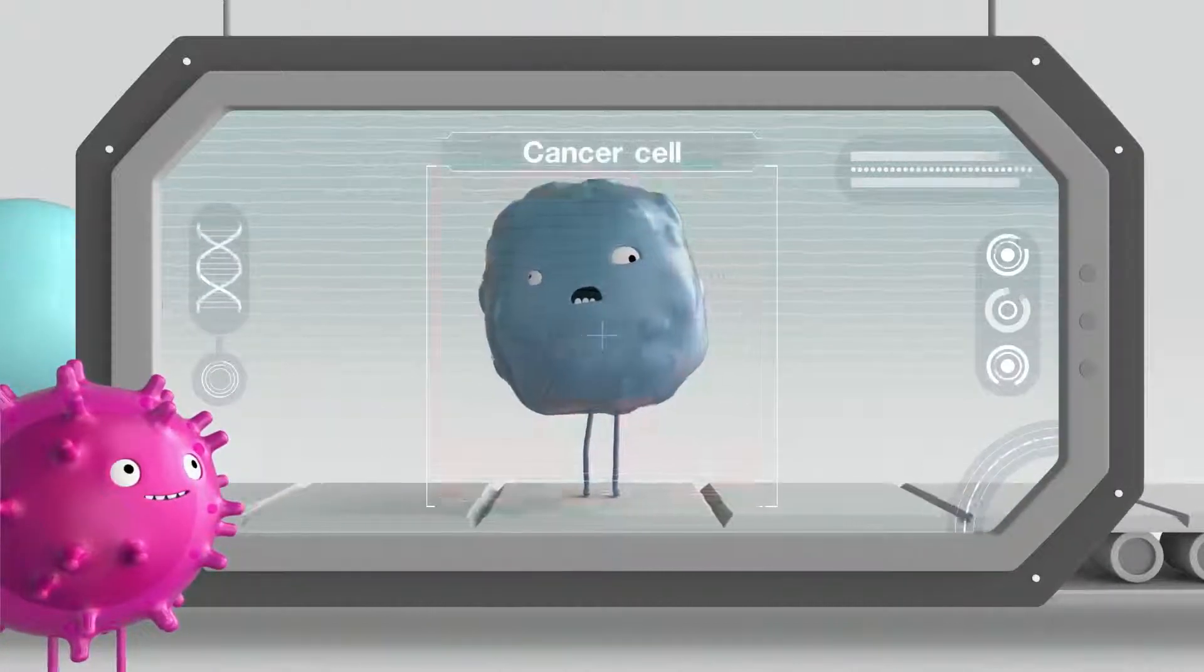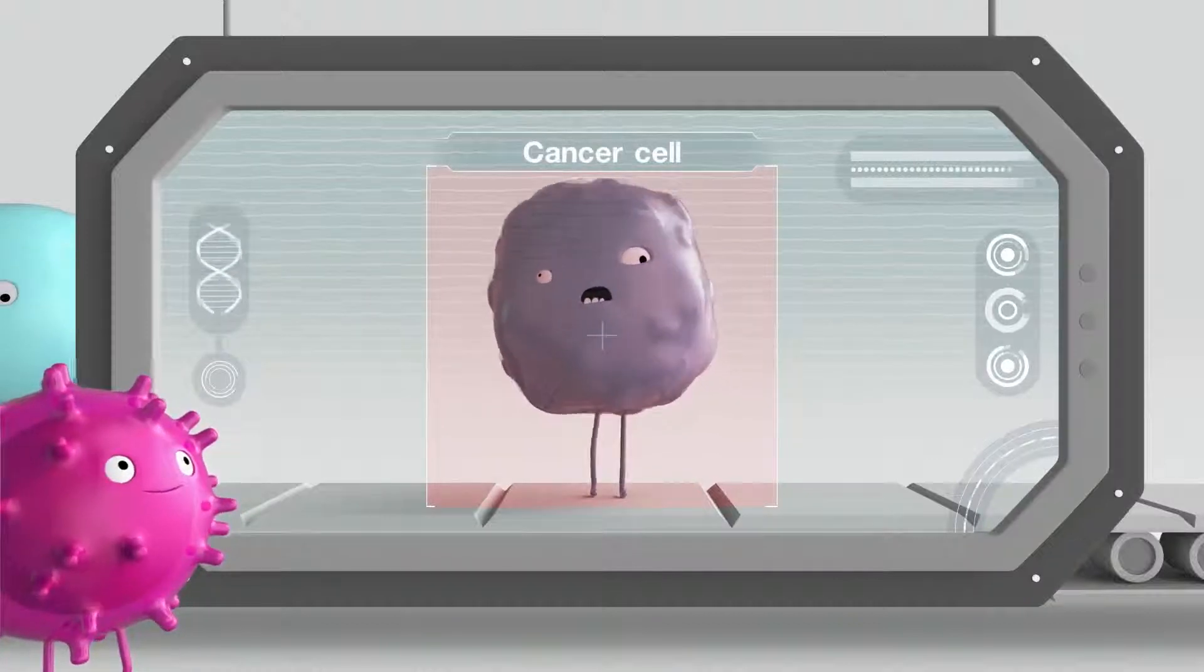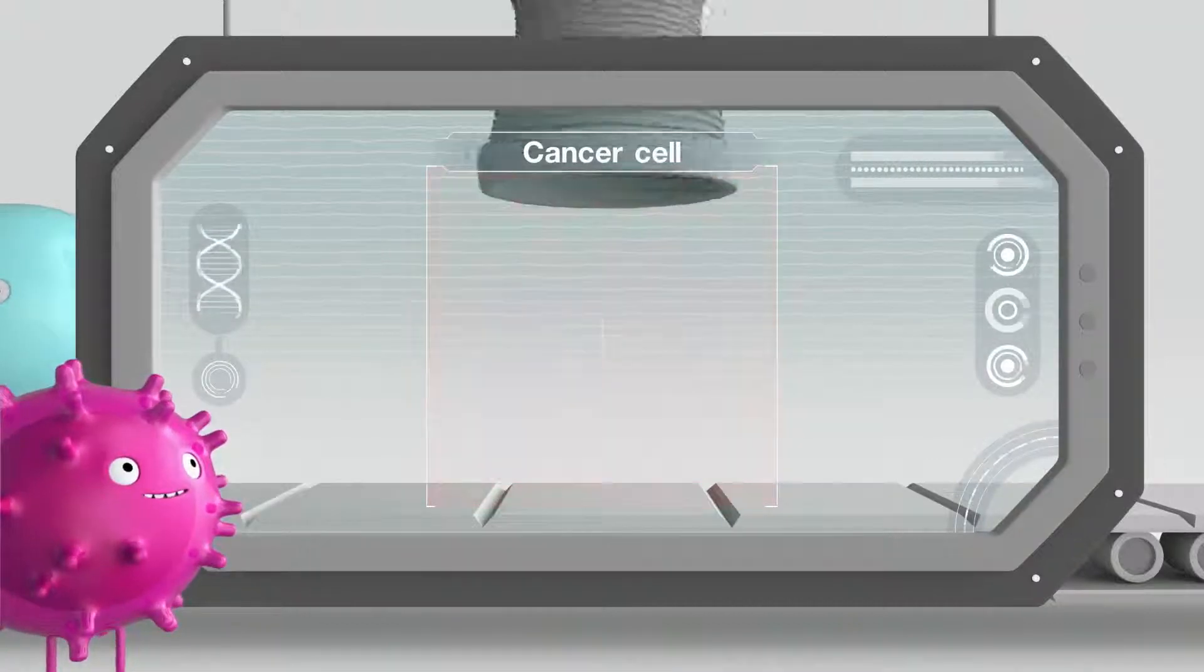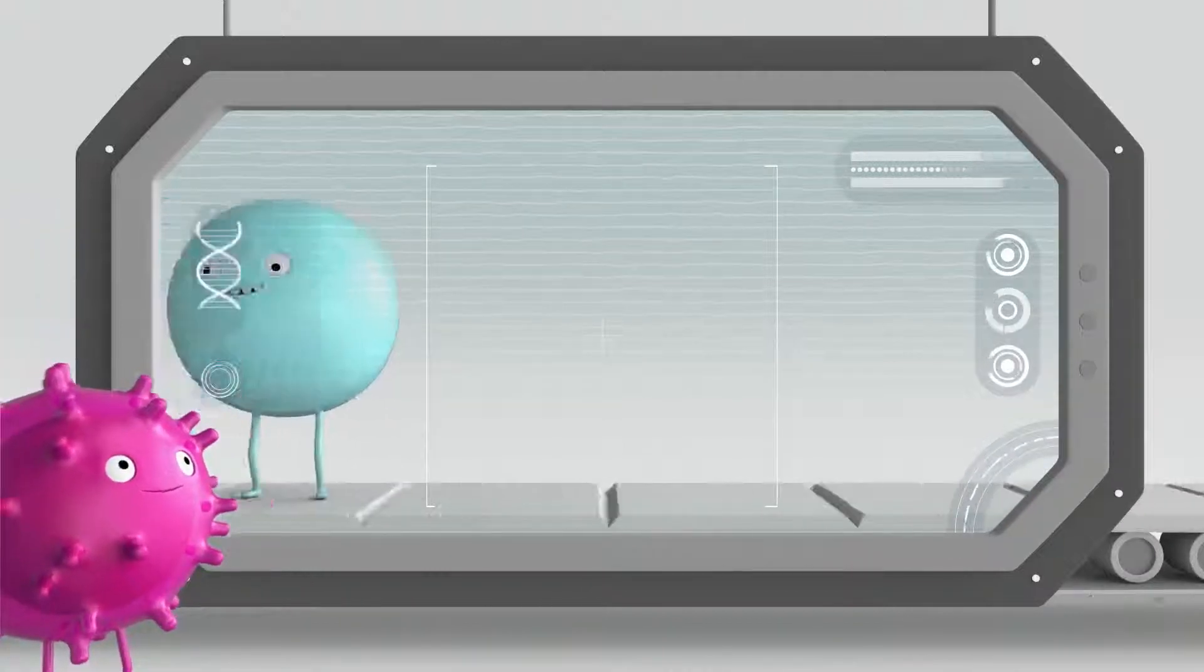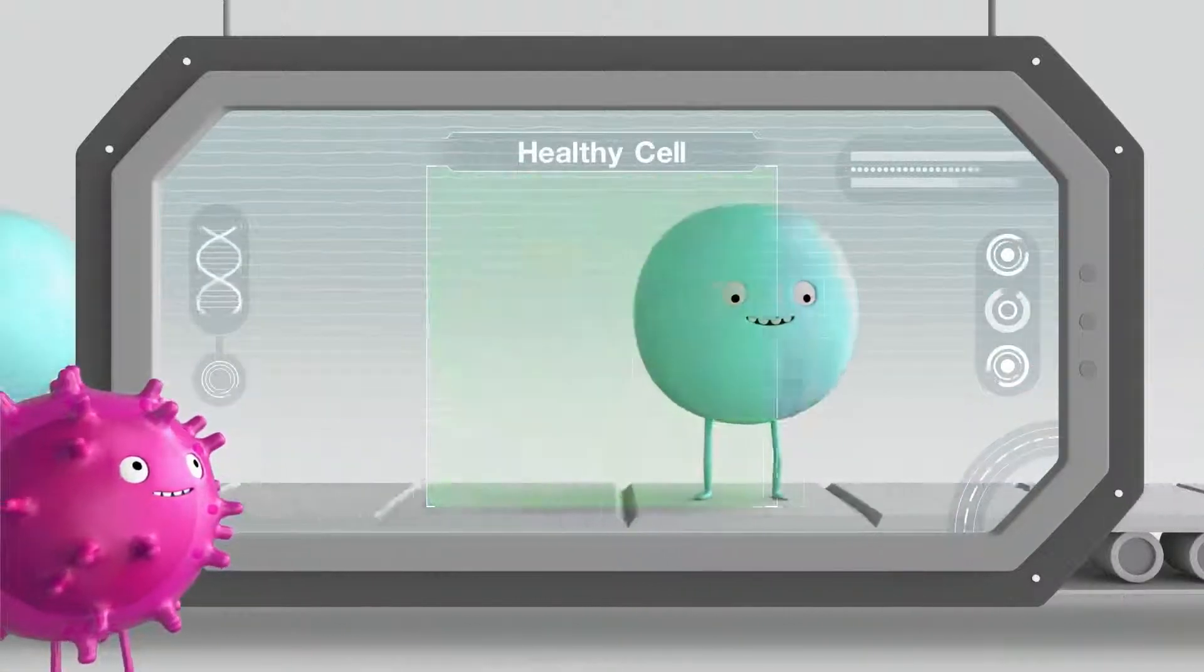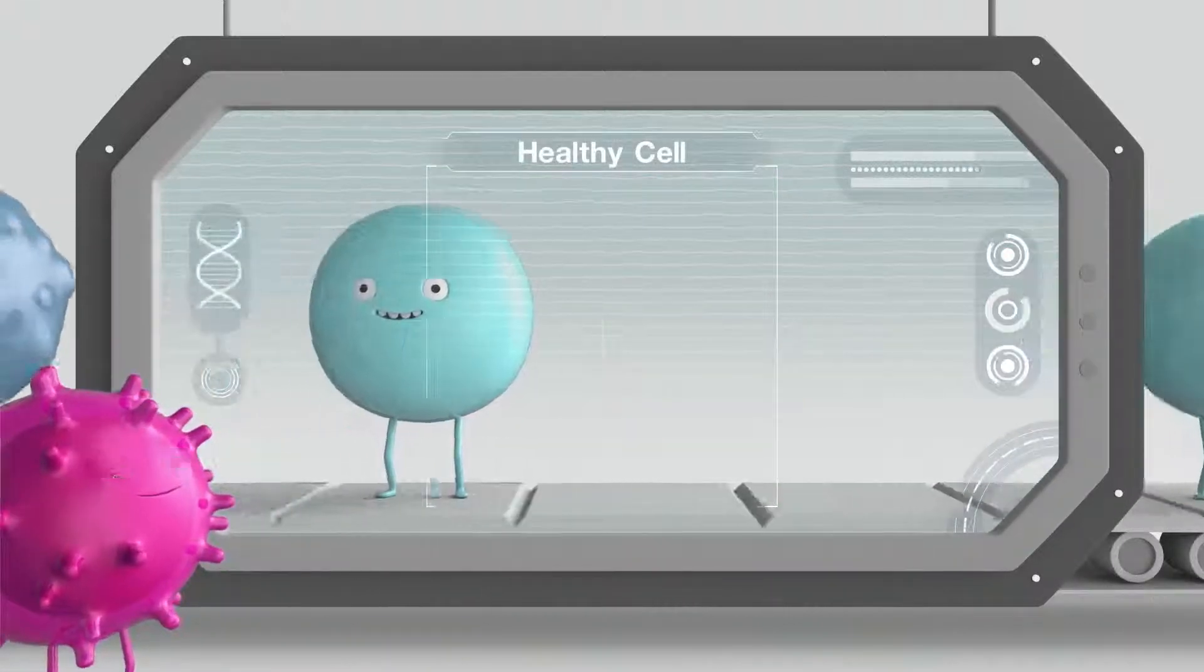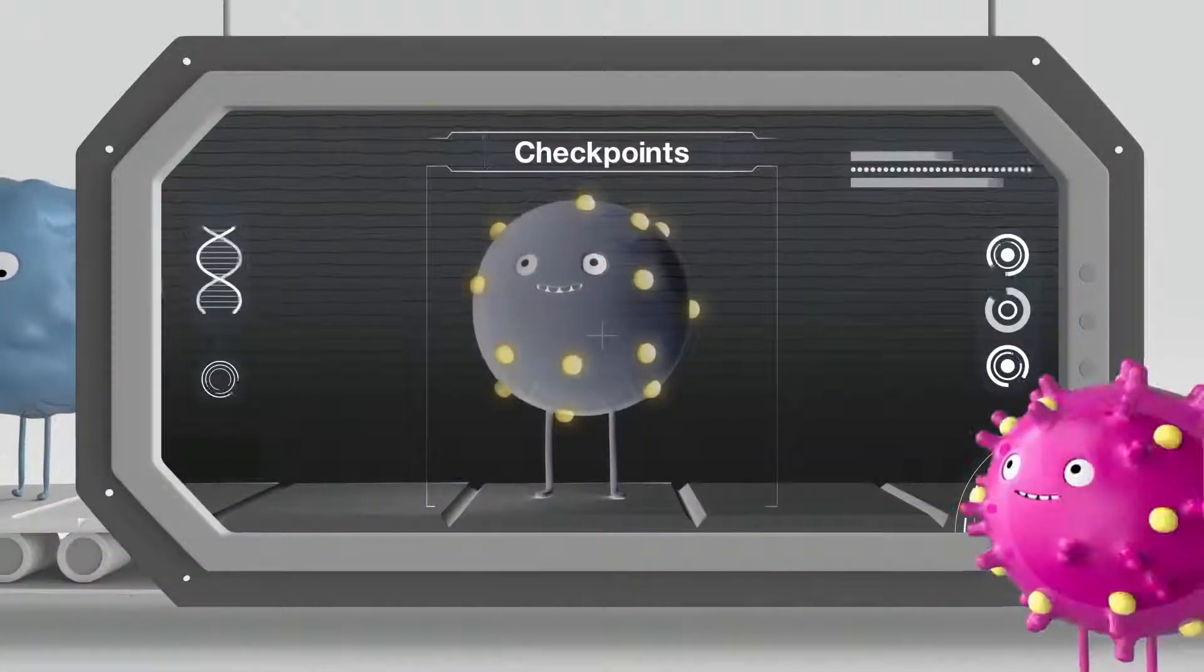When it finds any cancer cells in your body, it is able to recognize and destroy them in a number of clever ways. Your immune system is very powerful and therefore needs to be carefully controlled. To do this, immune cells and healthy cells work together through the use of special markers called checkpoints.